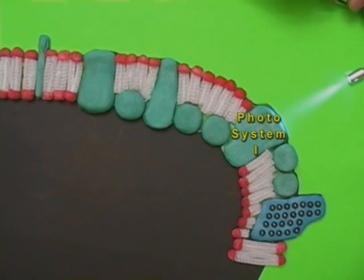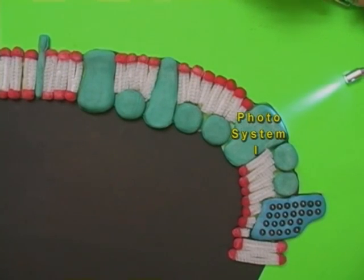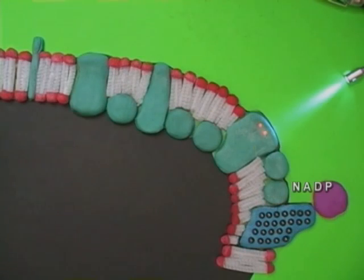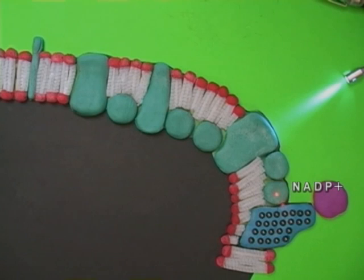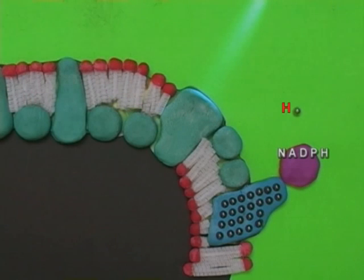When light shines on chlorophyll in Photosystem I, energized electrons pass down a second electron transfer chain to a molecule of NADP. NADPH forms and stores the two energized electrons.